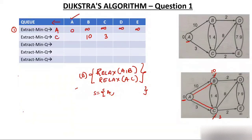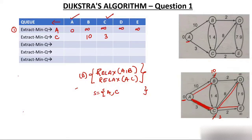Again extract minimum from Q — minimum is 3, which is node C. Extract C and add it to S. Make the edge to C dark. Find adjacent nodes of C: node A is already extracted, so skip it. E, D, and B are adjacent to C — mark them with a double line.